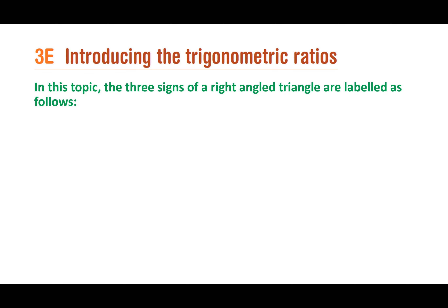Trigonometry is about how we can relate the sides of right angle triangles. We know we can find a side if we've been given two other sides — for example, if we have three and four, we can use Pythagoras to work out that the third side is equal to five. But we're not always going to be given every single side of the triangle.